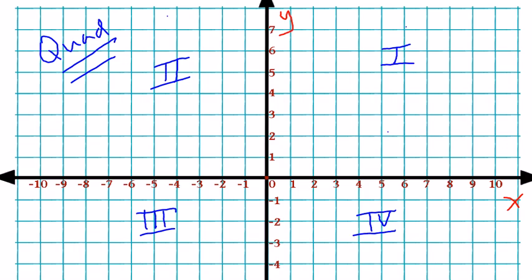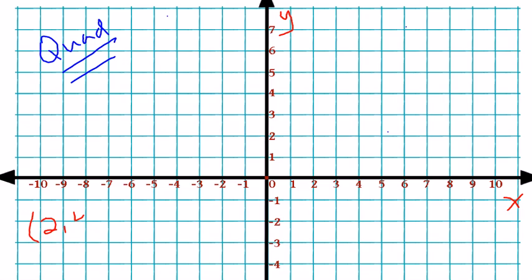Why is all this even important? Well, let's consider the ordered pair 2 comma 4. An ordered pair is simply a set of two numbers that consists of an x-coordinate, which is the first number on your left, and a y-coordinate, which is the second number to its right. The x-coordinate tells you how many units to move left or right on the x-axis, and the y-coordinate, which in this case is 4, tells you how many units to move up or down on the y-axis.